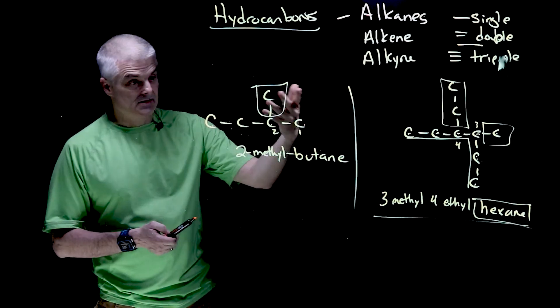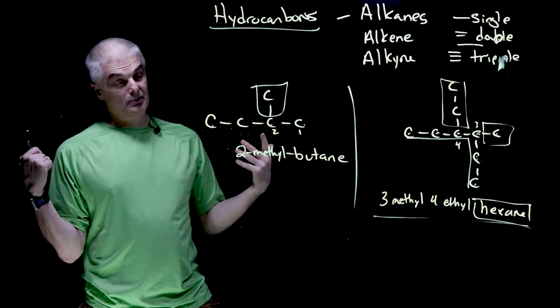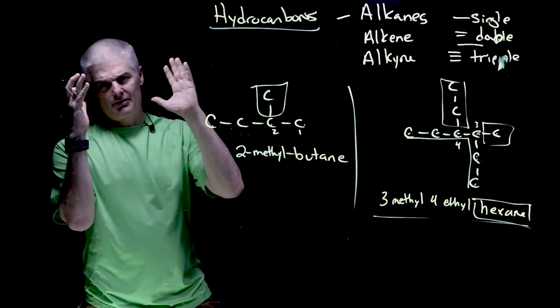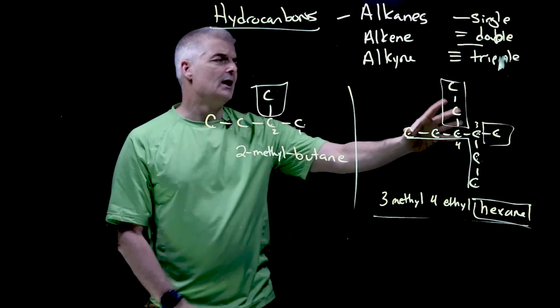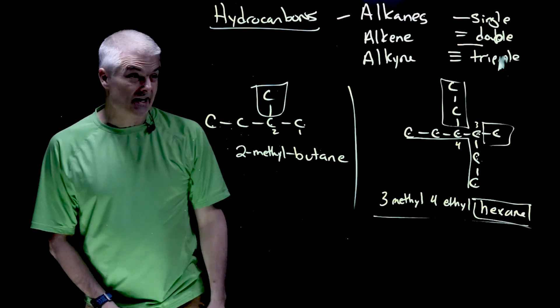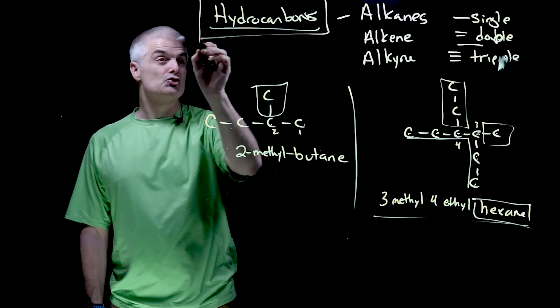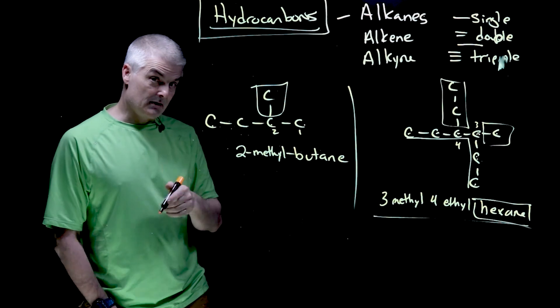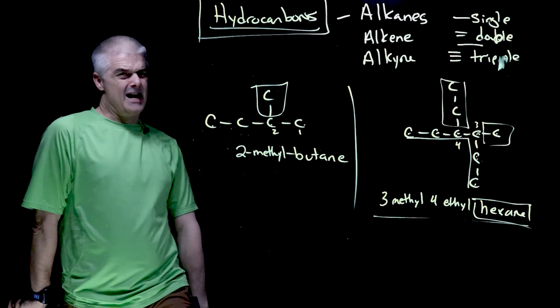You're going to have lots of opportunities to practice these in class. It's super crazy simple. You just have to kind of figure out methyl ethyl propyl butyl, what the numbers are. And then you play kind of a counting game. Super easy. Hydrocarbon naming, super easy. We'll see you in class because Houston, we don't got no problem.